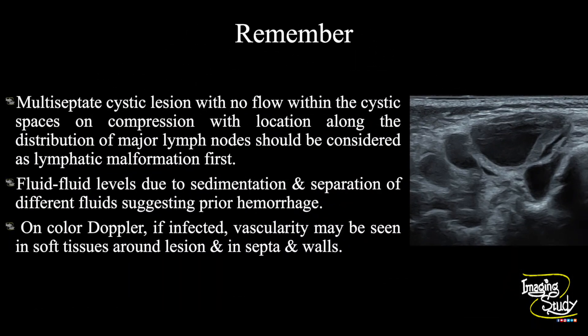Now the take-home message: a multiseptate cystic lesion with no flow within the cystic spaces on compression, located along the distribution of major lymph nodes, should be considered as lymphatic malformation first. If you see fluid-fluid levels due to sedimentation and separation of different fluids, it may suggest prior hemorrhage. If the lesion gets infected, on color Doppler you will see vascularity within surrounding soft tissues and in the wall and septa of the lesion.